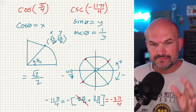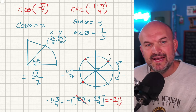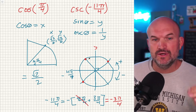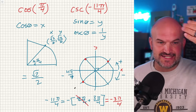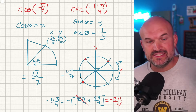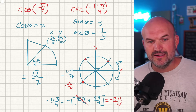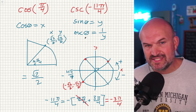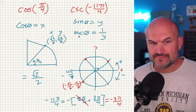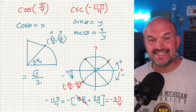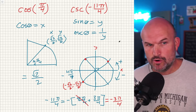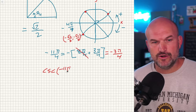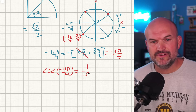So the coordinate point for -3π/4 (equivalently -11π/4) is (-√2/2, -√2/2). Now we evaluate: cosecant of -11π/4 equals 1/y, and our y-coordinate is -√2/2. So we have 1 divided by (-√2/2).